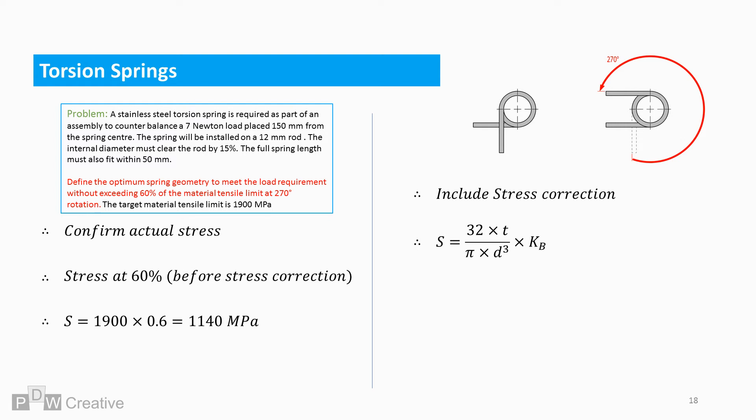We can add stress correction to the stress equation to account for the increased stress. We're going to use Wahl stress correction in this instance. The equation multiplies by (4c² - c - 1) / (4c(c - 1)). The only problem is we don't know the spring index c, so let's find it.